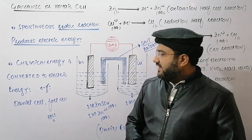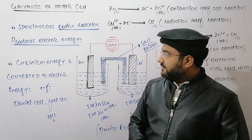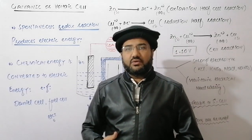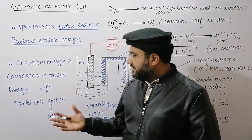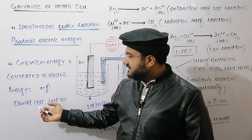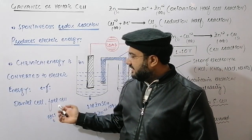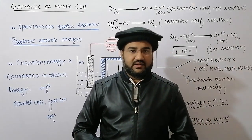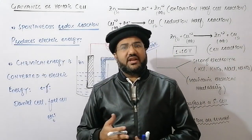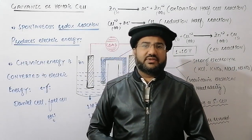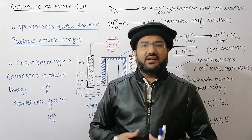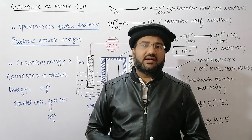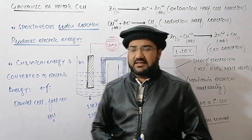There are so many examples of the galvanic or voltaic cells, and two of them are mentioned here: one is the Daniel cell and the other is the fuel cell. There are many other examples, but in this particular lecture we will focus on the Daniel cell.